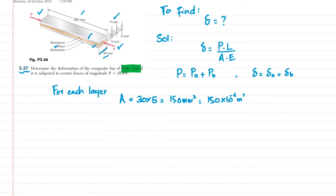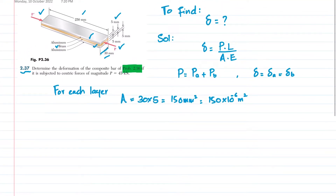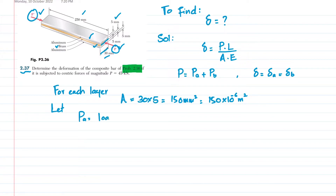When the load P is applied, it will be shared by the aluminum layers and the brass layer. Let P_a be the load on each aluminum layer, and P_b be the load on the brass layer.